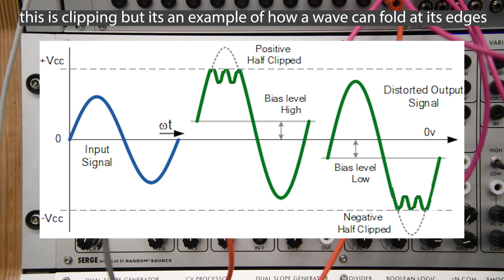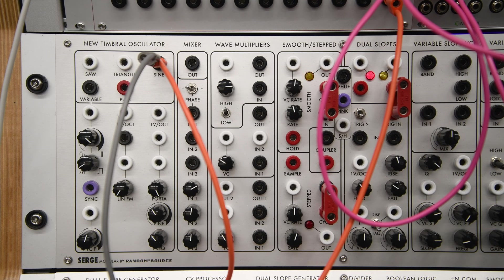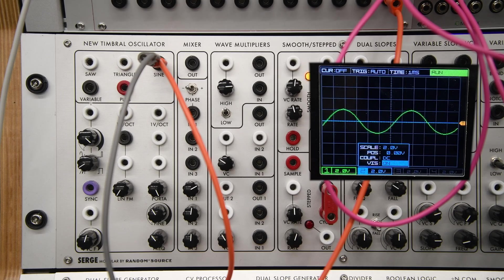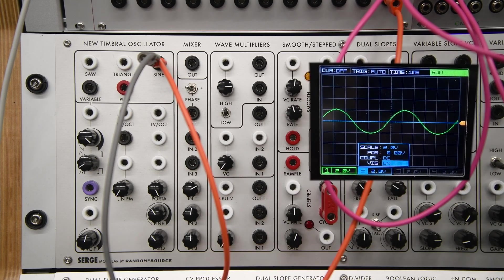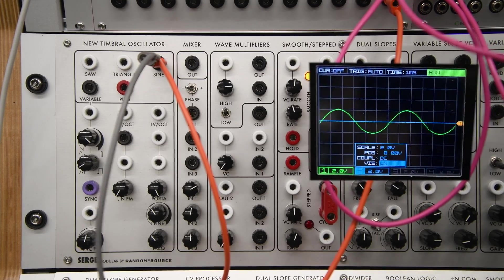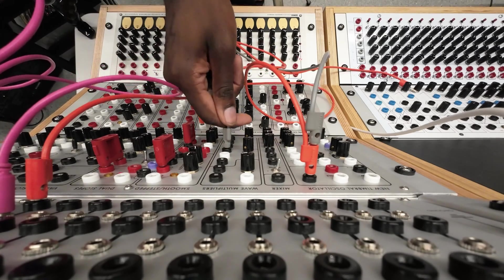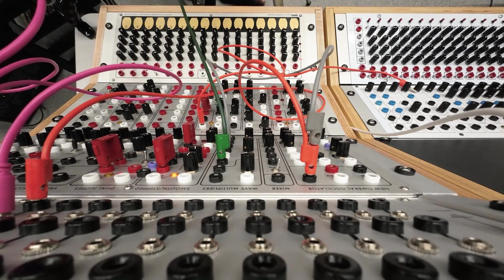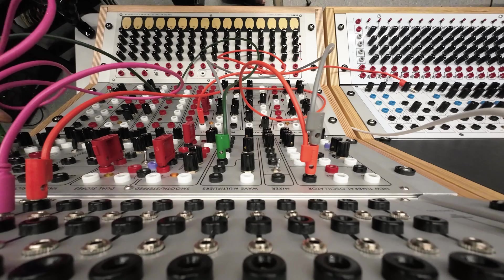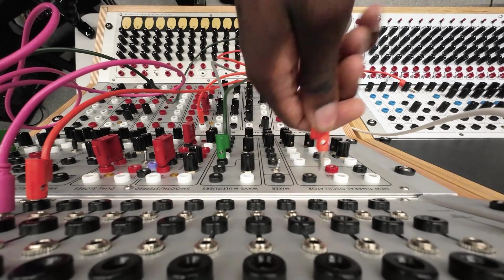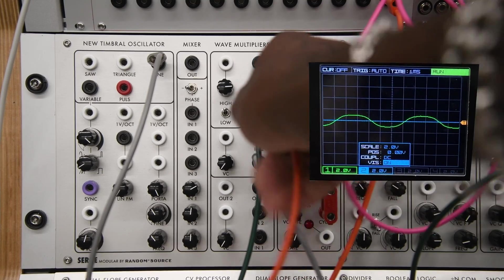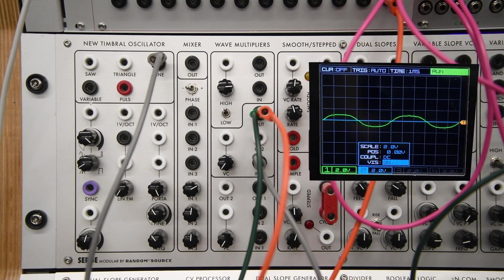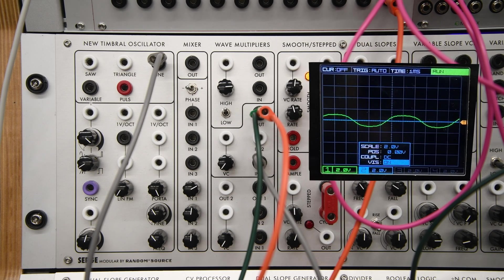We are going to look at the sine wave through the wave multiplier. On the oscilloscope, you're looking at the sine wave by itself. With the knobs on the wave multiplier closed, you will see not much of a difference. We're going to go into our wave multiplier, out of our wave multiplier, into the mixer. The wave multiplier has two inputs, one output, and a CV input to control the amount of wave multiplying.